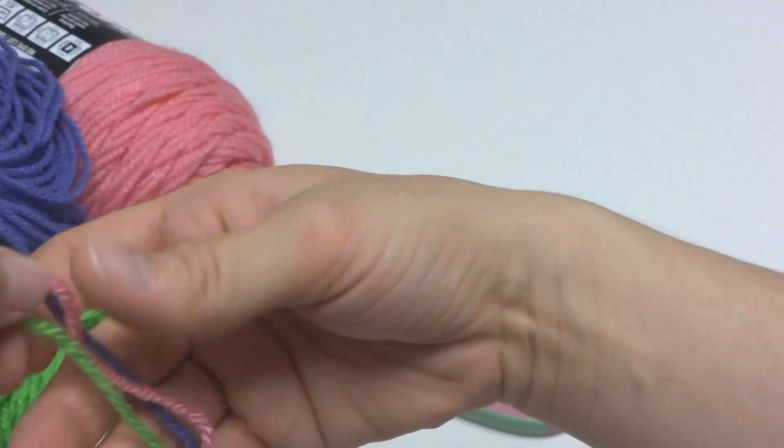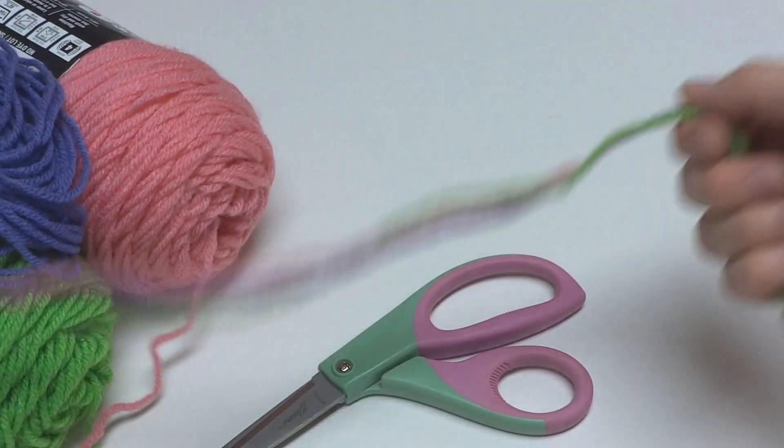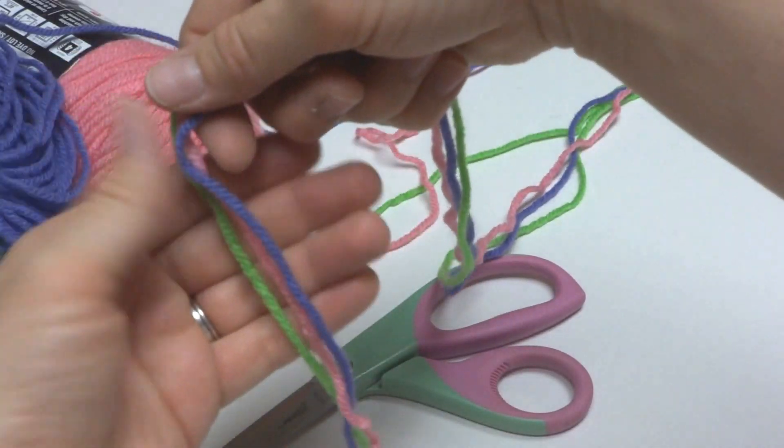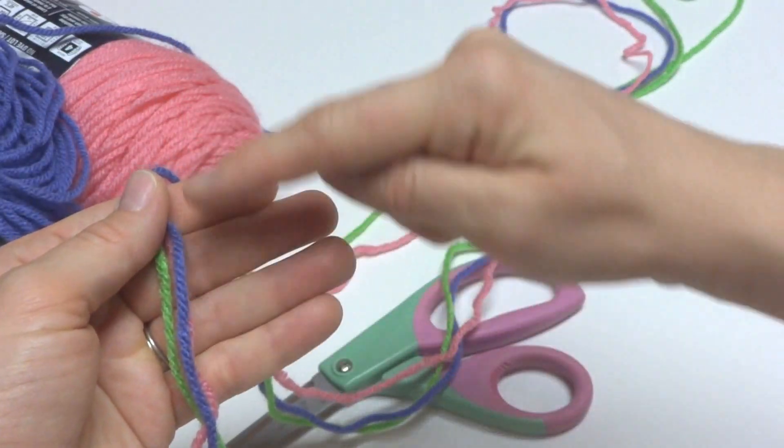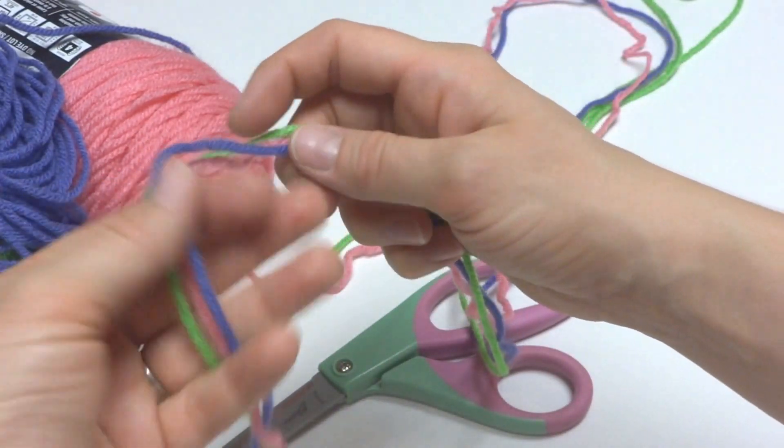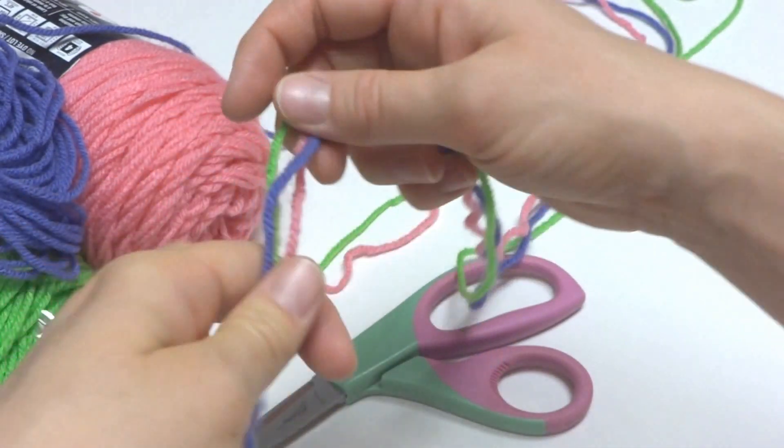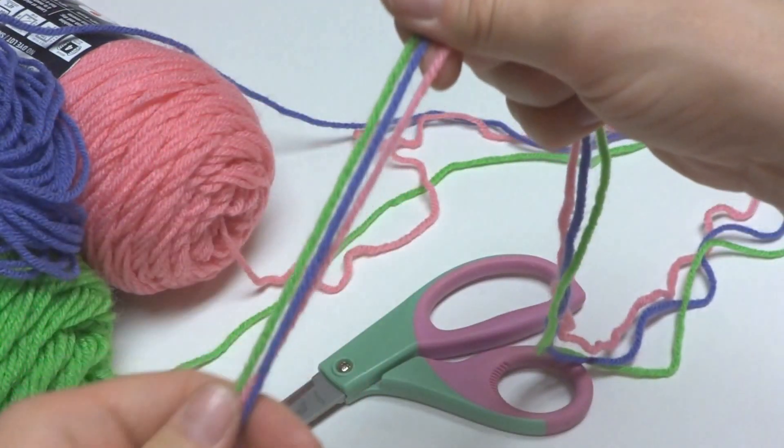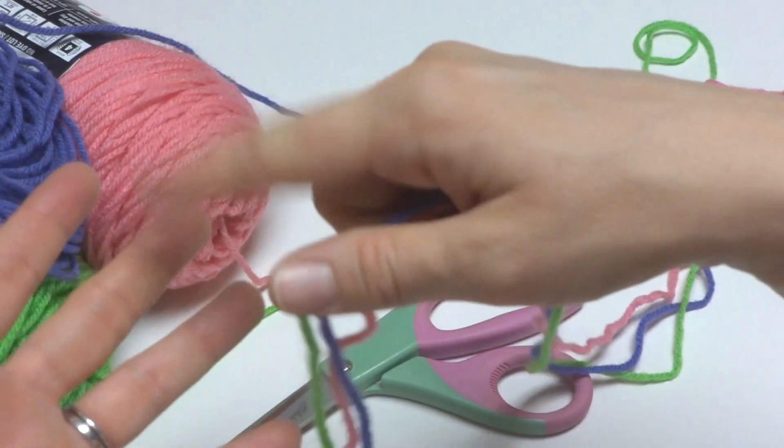And depending on how big you want your pom-pom to be, you're going to take the yarn in your hand. If you want a large pom-pom, wrap it around all four fingers. If you want something small, wrap it around three fingers or even two fingers. We're going to do around all four fingers in this tutorial, but feel free to do either size you like.